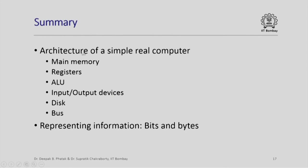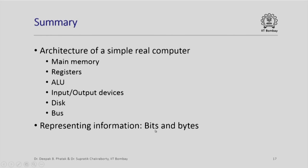In summary, what we saw in this lecture is the architecture of a simple but real computer. The main parts are main memory, registers, arithmetic logic unit, input output devices, disk, bus, and a controller which along with the arithmetic logic unit constitutes the central processing unit. We have also seen that information is represented in a computer using zeros and ones, which are called bits, and we access bits in chunks of eight bits at a time, which are also called bytes. Thank you.